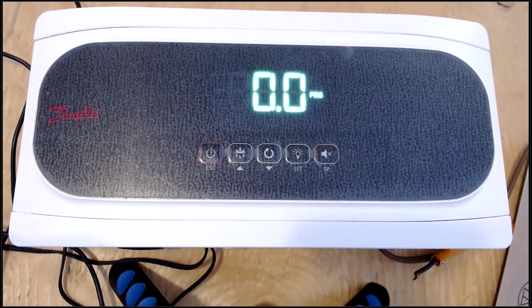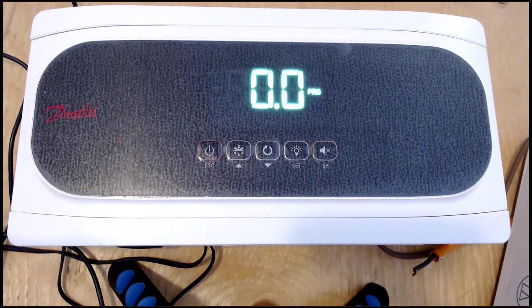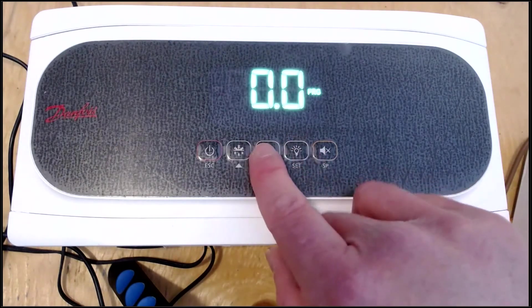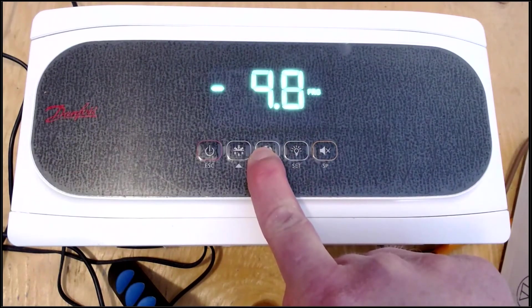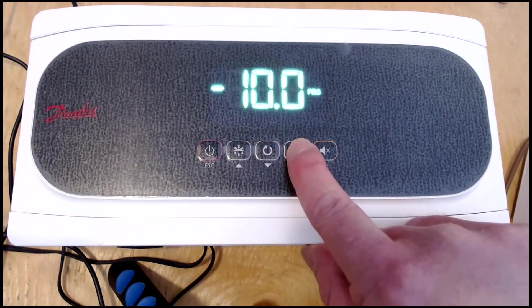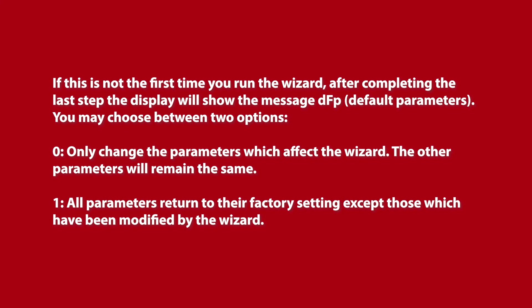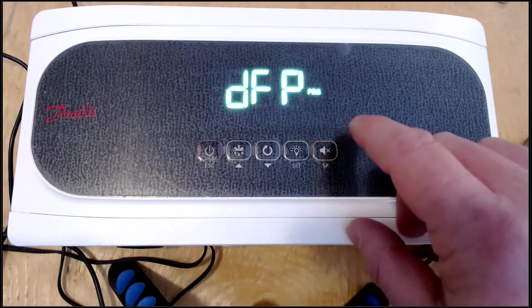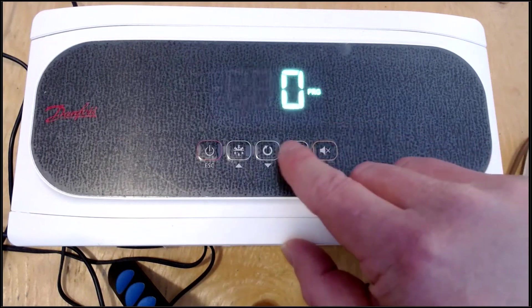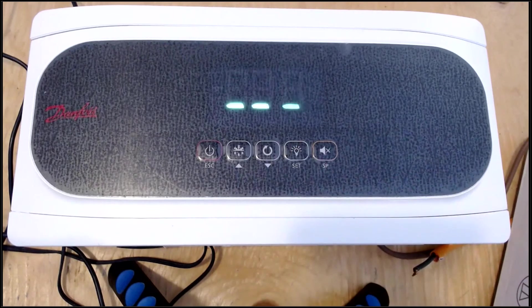We have now selected a cooler freezer with electric defrost. SP will display on the controller — press set and then use the down button to scroll down in value until minus 10 is displayed, then press set. So let's scroll down here to minus 10 and hit set. Since this is not the first time we have done this wizard, once that last step is complete, the display will show DFB — default parameters — and you need to choose between two options: 0, which means only the parameters included in the wizard will be modified, or 1, which means parameters modified by the wizard will be changed and all other parameters will return to their factory settings. We will press 0, as we only want the values in the wizard that we modified to be changed. Since it's flashing zero, hit set and the controller will reset itself.